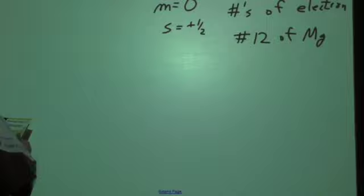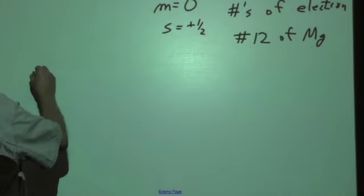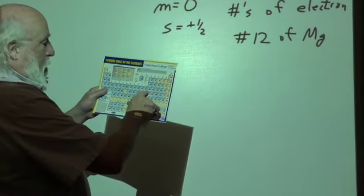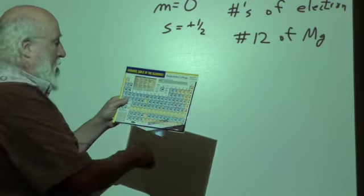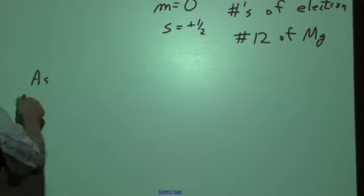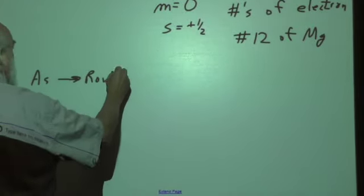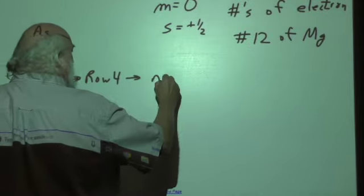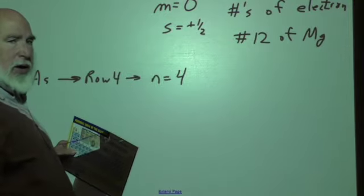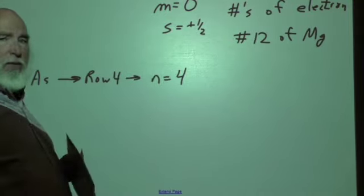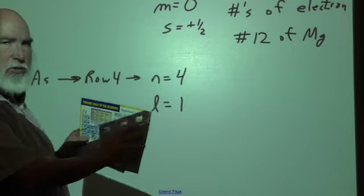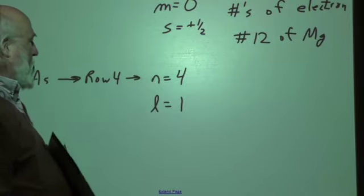All right, next one. We have arsenic. Well, arsenic is found right here. It's in the third column of this group of six over here. It's found in the fourth row. So this is row four, and that means then that n equals four. It is the P range, and we know that P electrons occur whenever the L value is one. Those are three-dimensional figure-eight shaped paths that are represented by these six over here, so L equals one.